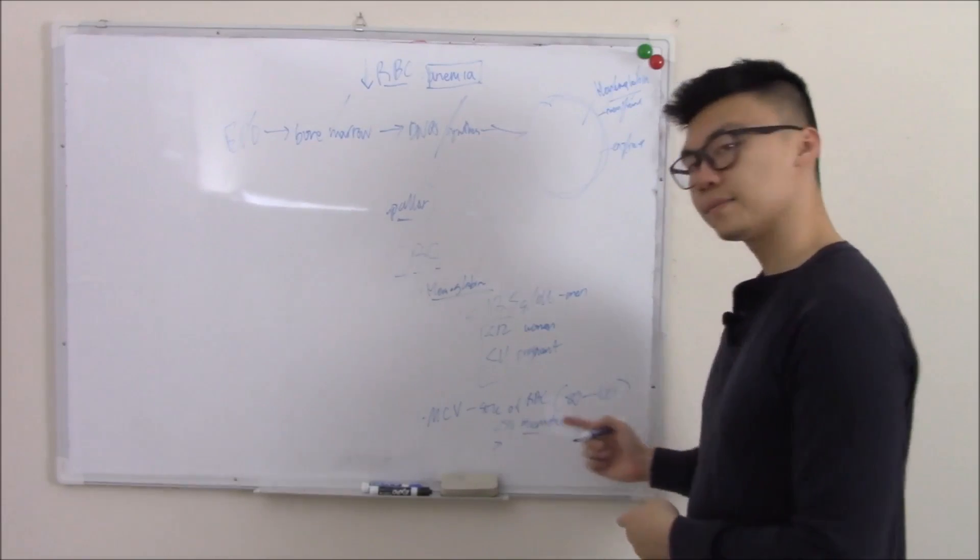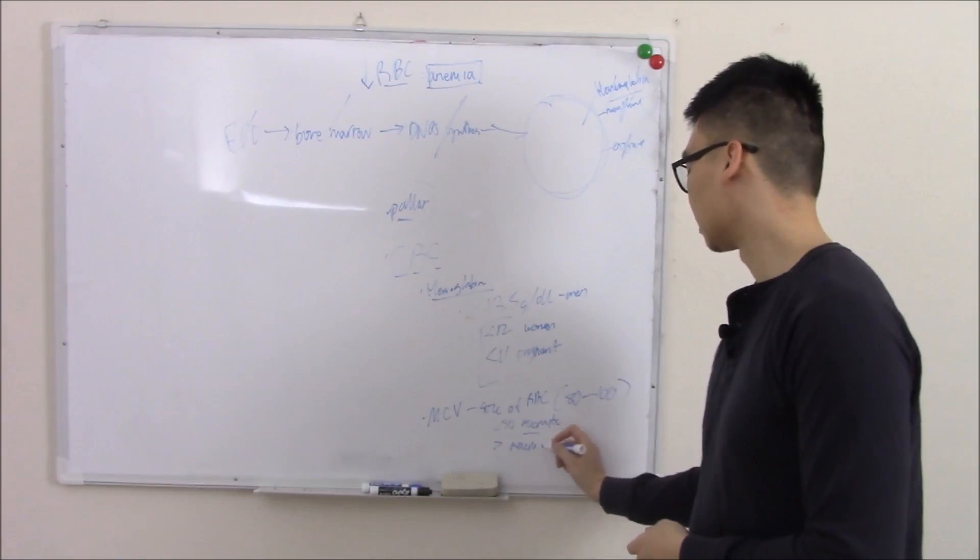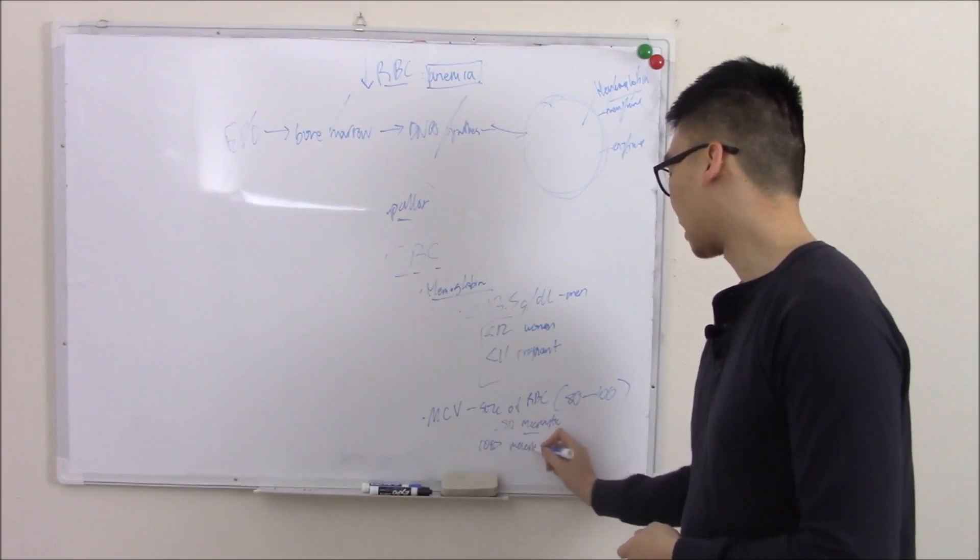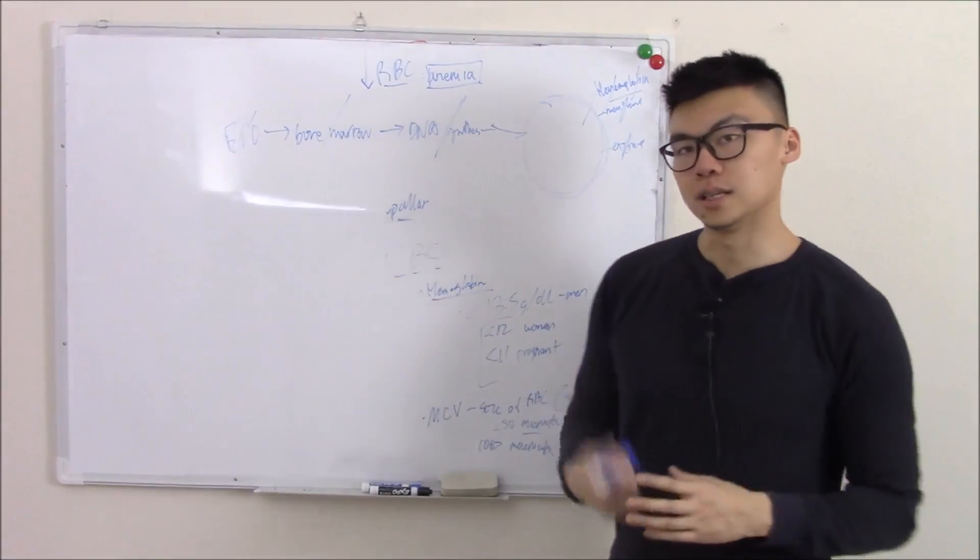If it's over that, we call that macrocytic. So that kind of makes sense. So over a hundred, macrocytic.